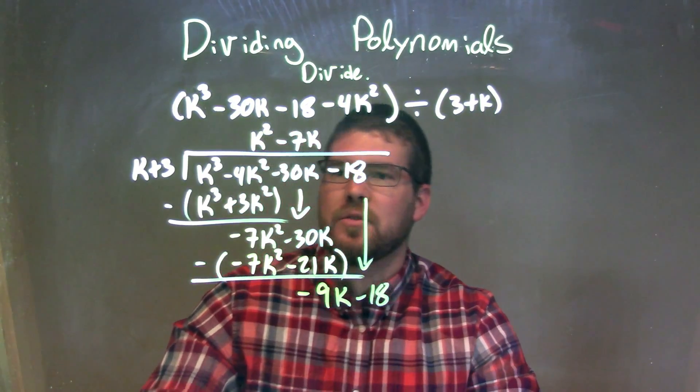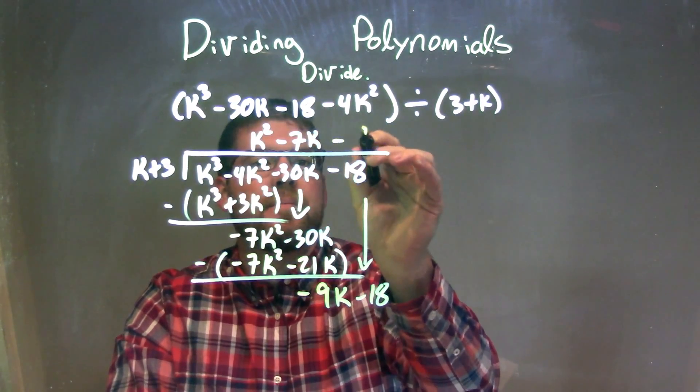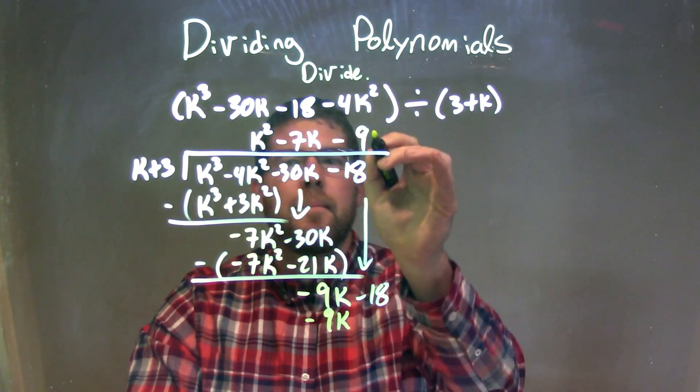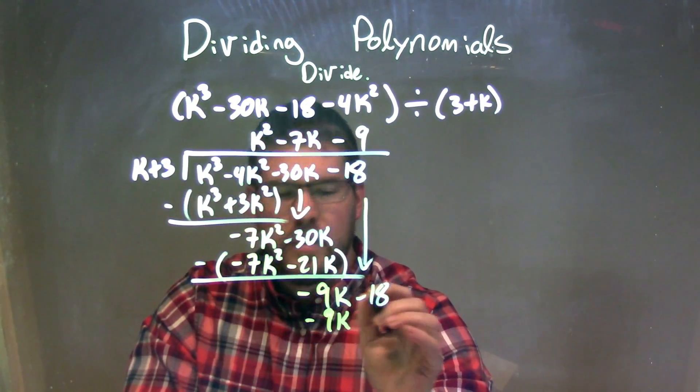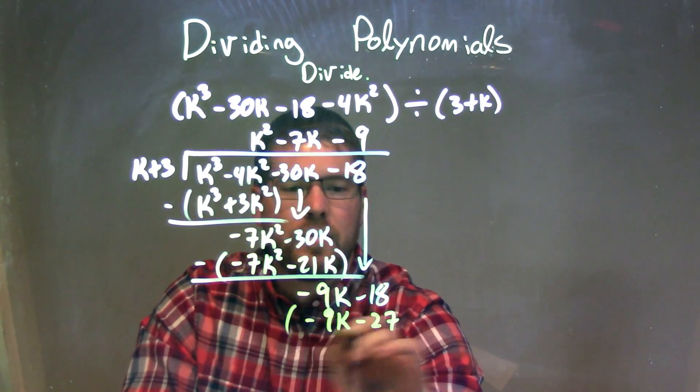And again ask the same question. What times k gives me a minus 9k, and that's a minus 9. Minus 9 times k is minus 9k. And minus 9 times 3 is a minus 27. Let's subtract the two.